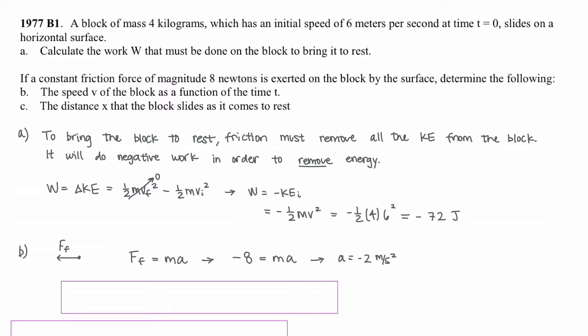The magnitude of the friction force is 8 newtons, but because the object is slowing down, the force of friction must be negative. Solving for a, we divide negative 8 by 4, giving an acceleration of negative 2 meters per second squared.